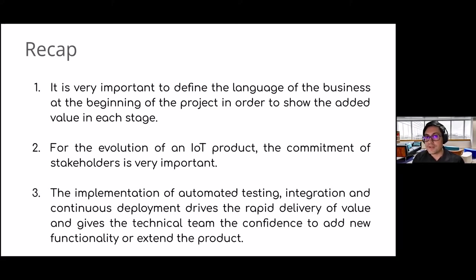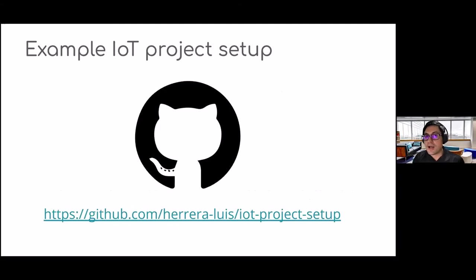The third point is that the implementation of automated testing, continuous integration, and continuous deployment drives rapid delivery of value and gives the technical team confidence to add new functionality or extend the product. We would like to share an example IoT project setup on a repository where you can find features like unit tests, integration tests, and a pipeline for any IoT project you would like to build in the future.